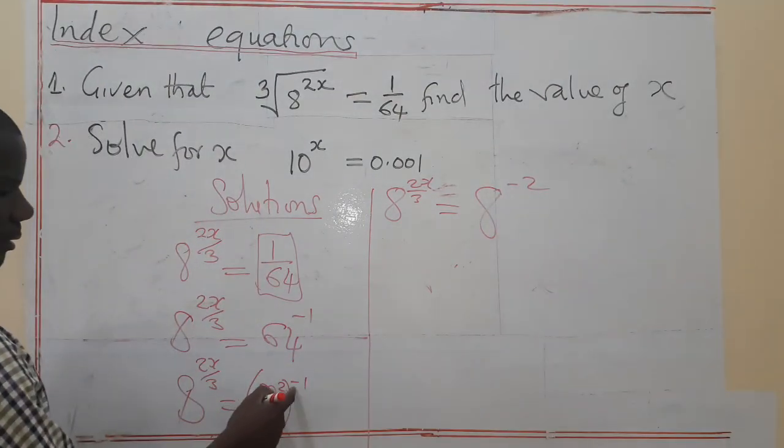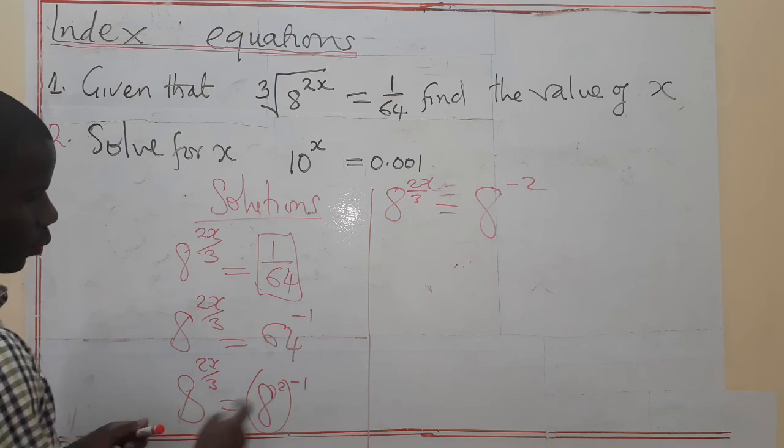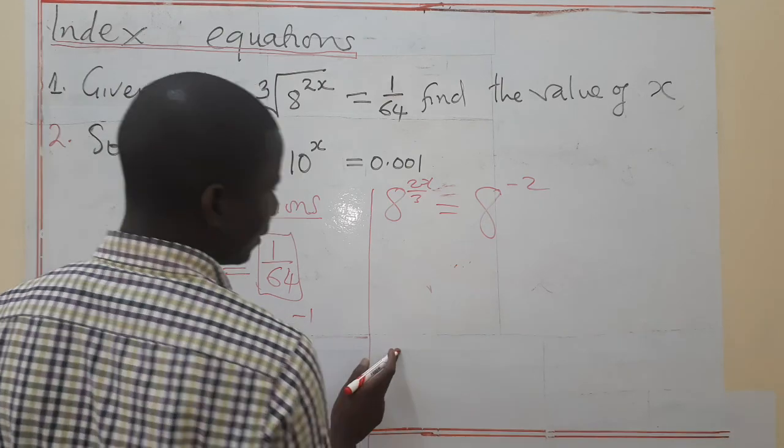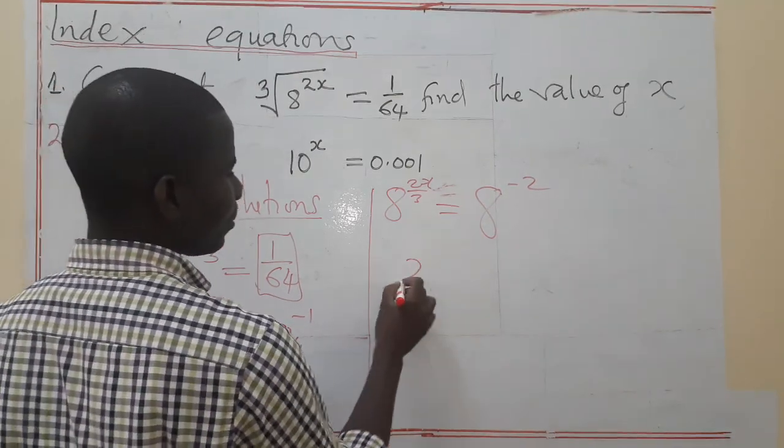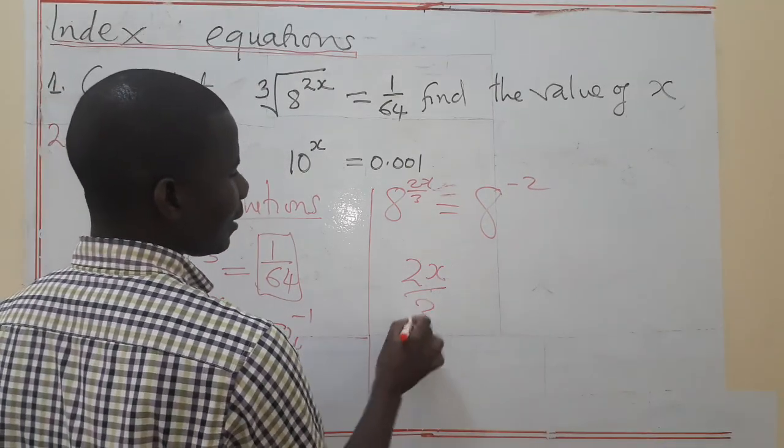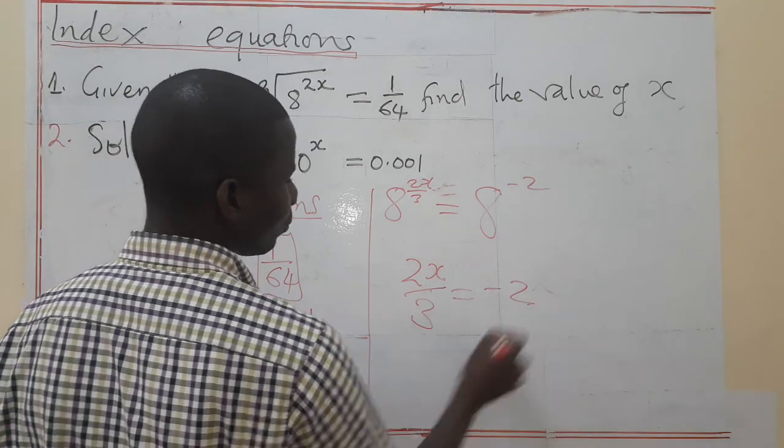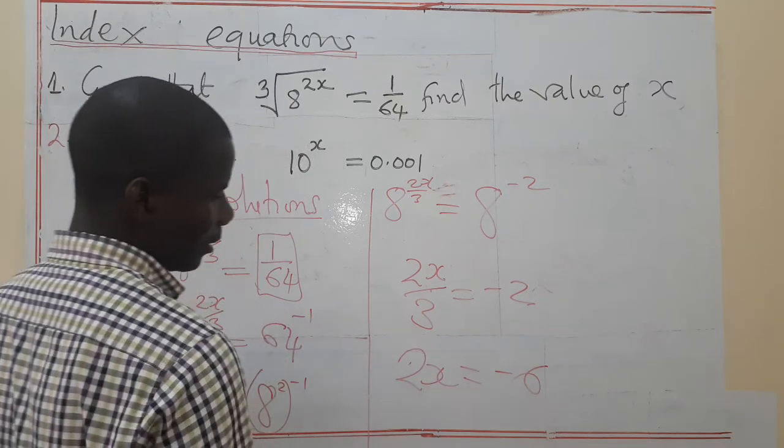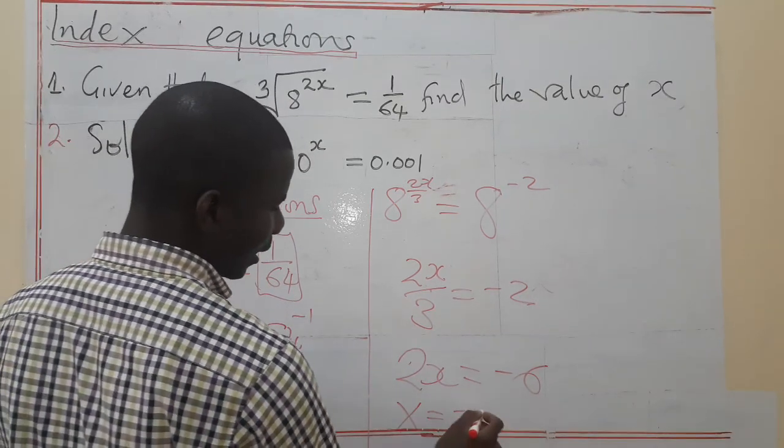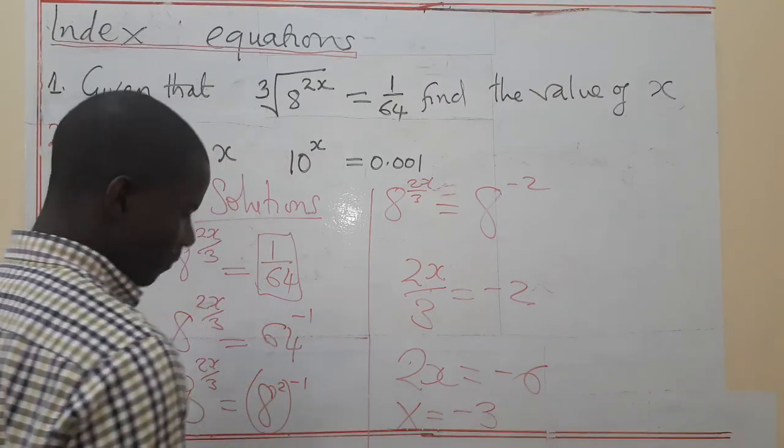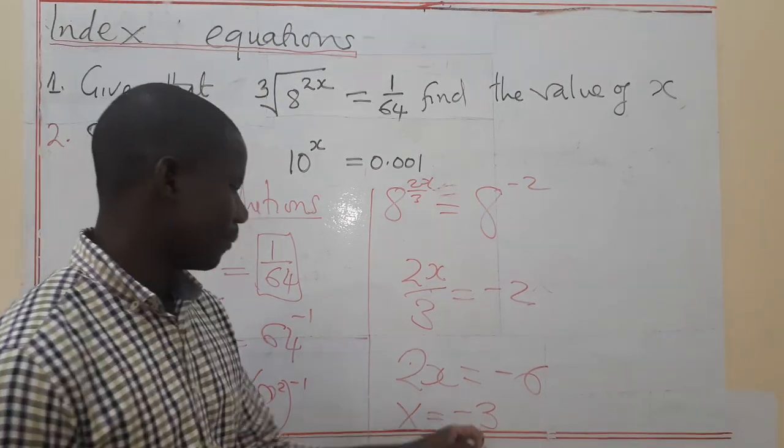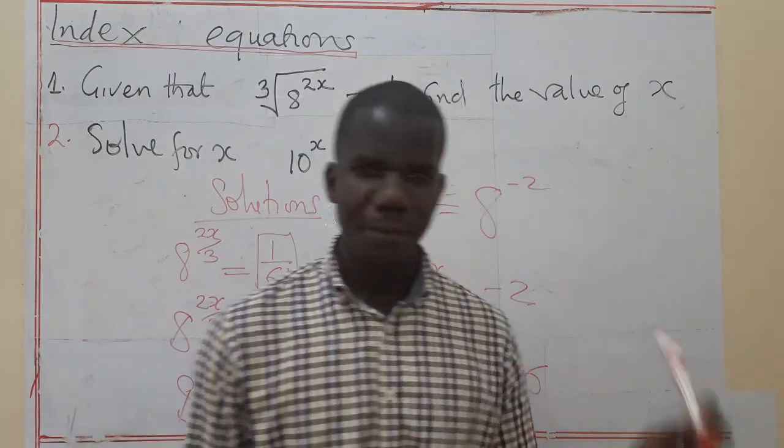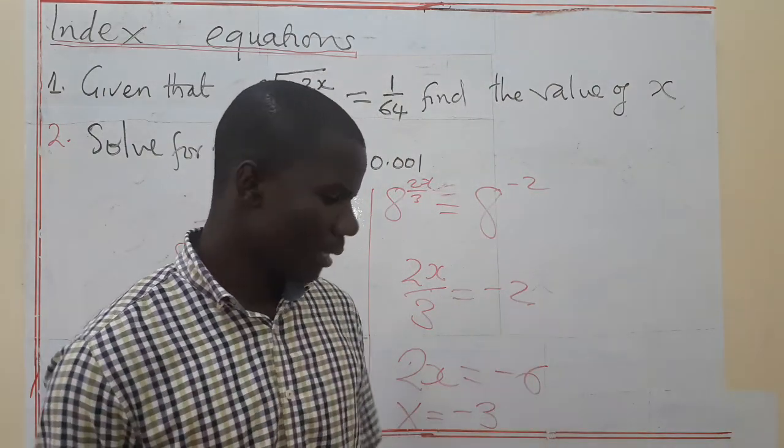We multiply this, the power rule, multiply this 2 by negative 1. And at this point now we need to equate the indices: 2X/3 equals negative 2. Then 2X equals negative 6. Then X equals negative 3. This is what is going to be our answer. You divide both sides by 2. I hope it's very clear on the first one.